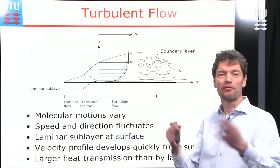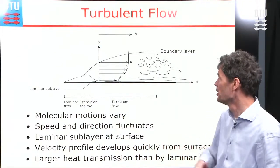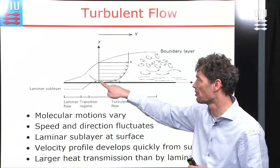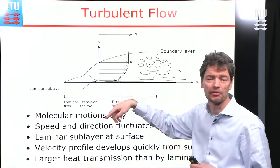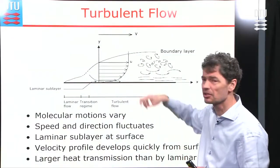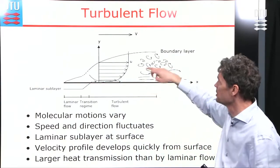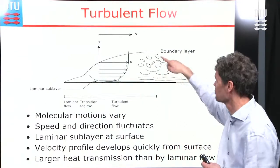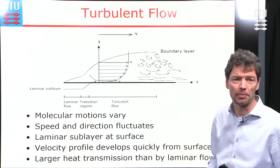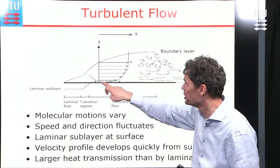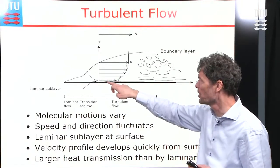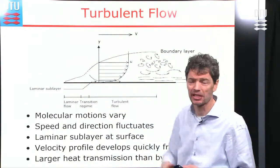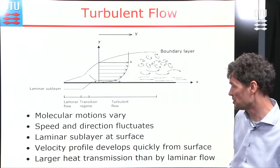For the more vigorous turbulent flow, the velocity is also zero at the surface but increases much more rapidly. The flow is not smooth layers but a vigorous motion with fluctuations up and down. Only very near the surface do we have a laminar sublayer. Turbulent flow produces much more intense heat transfer compared to laminar flow.